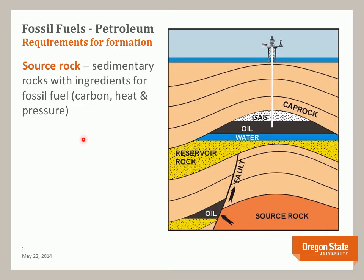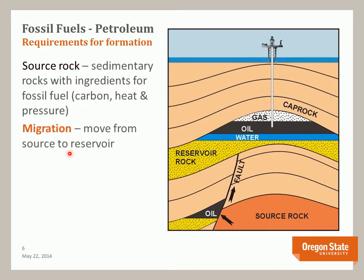The first thing you need is a source rock — these are sedimentary rocks with ingredients for fossil fuel production, including a source of carbon, a source of heat, and a source of pressure. The next requirement is migration: you have to move the evolving petroleum from the reservoir, because if it gets too hot in that area it will degrade. Migration can occur along faults or through the general porosity of sedimentary rocks.